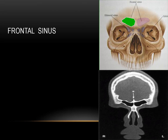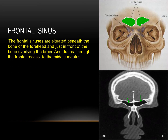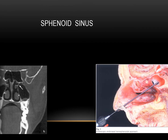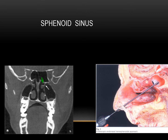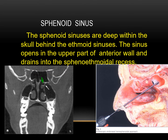The frontal sinuses are situated beneath the bone of the forehead, just in front of the bone overlying the brain, and drain through the frontal recess to the middle meatus. The sphenoid sinuses are deep within the skull, behind the ethmoid sinuses. The sinus opens in the upper part of the anterior wall and drains into the sphenoethmoid recess.